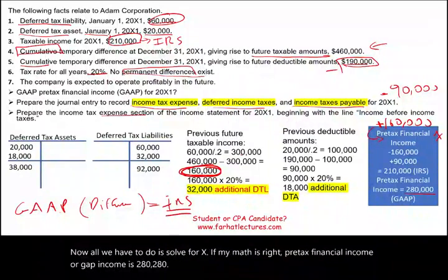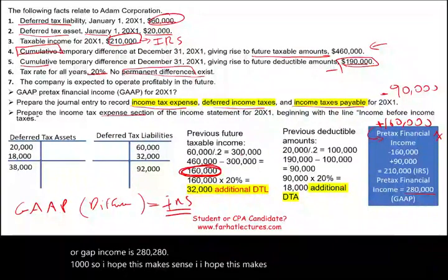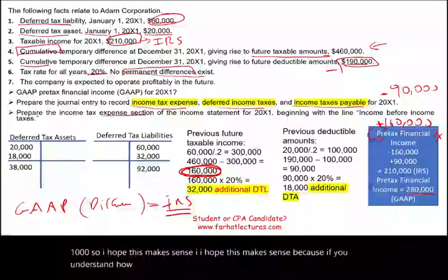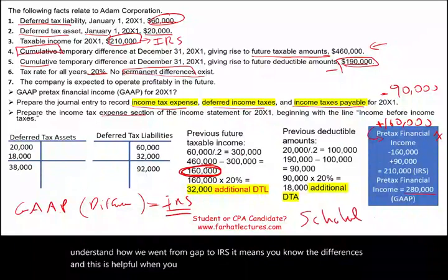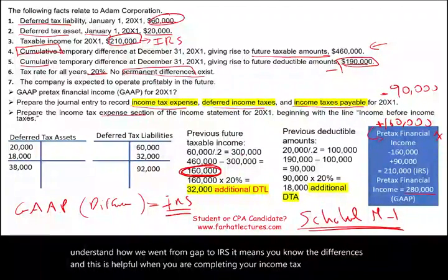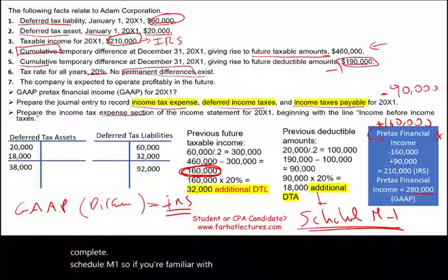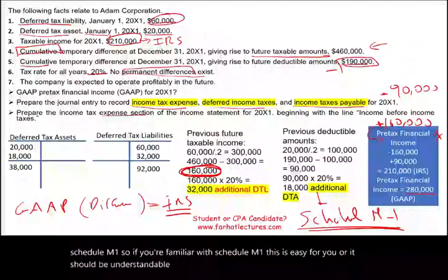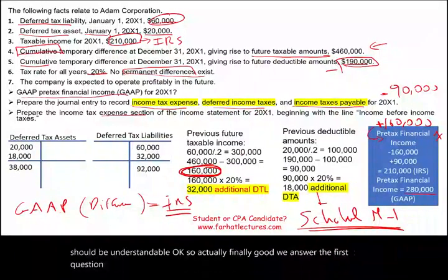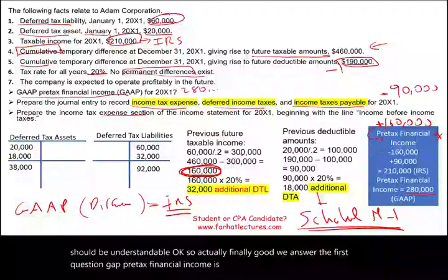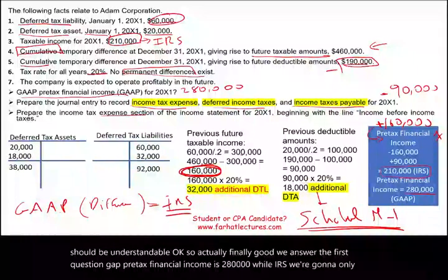I hope this makes sense, because if you understand how we went from GAAP to IRS, you know the differences. This is also helpful when completing your income tax course and looking at Schedule M1. So GAAP pre-tax financial income is $280,000, while we're going to pay the IRS based on only $210,000.